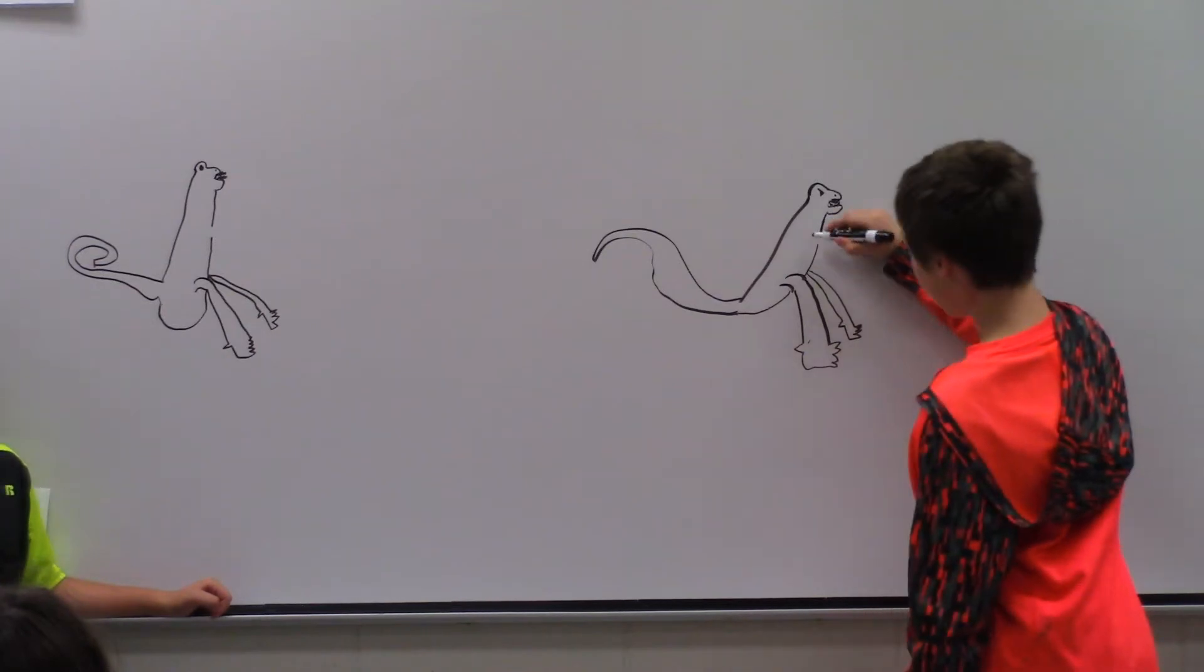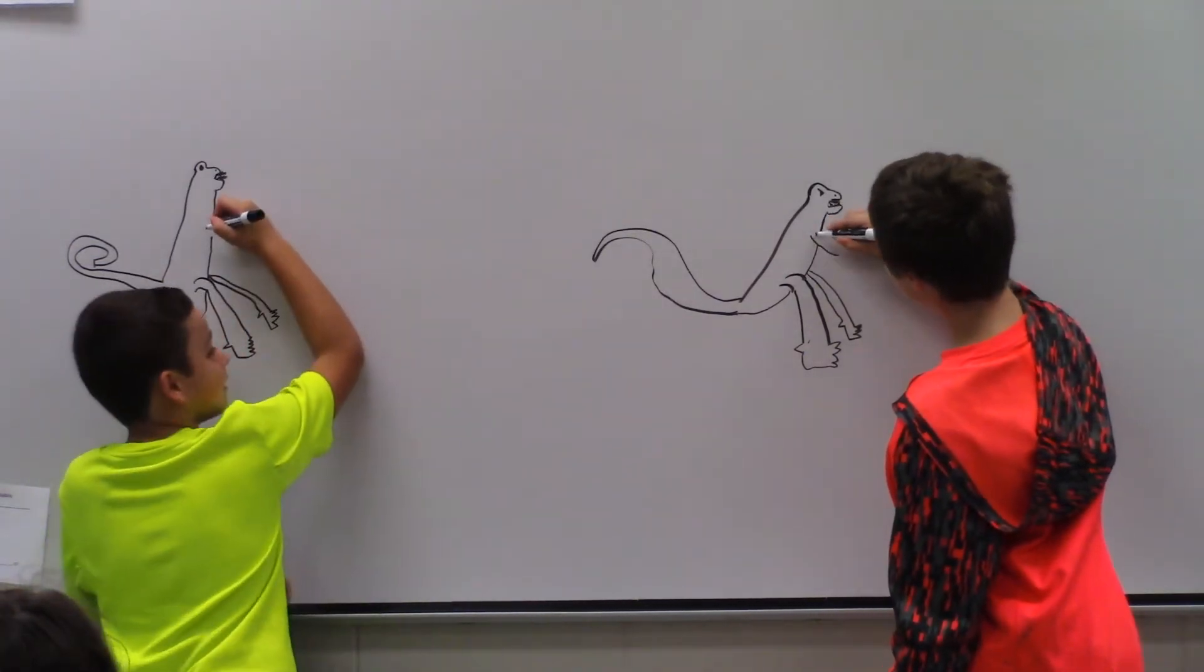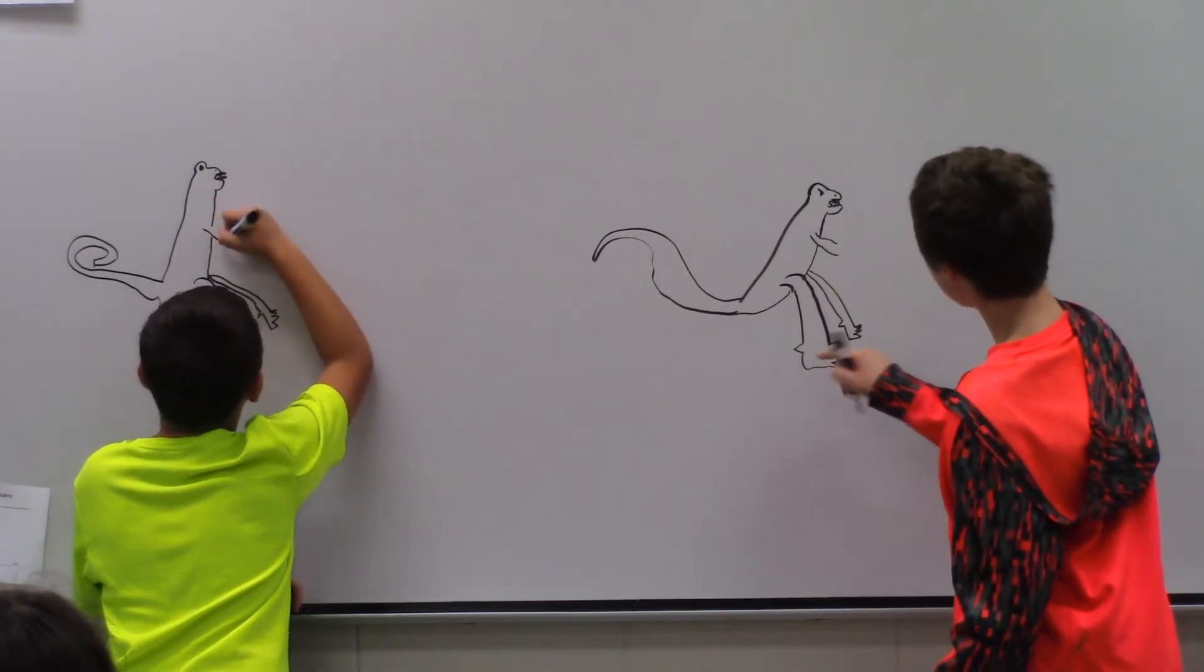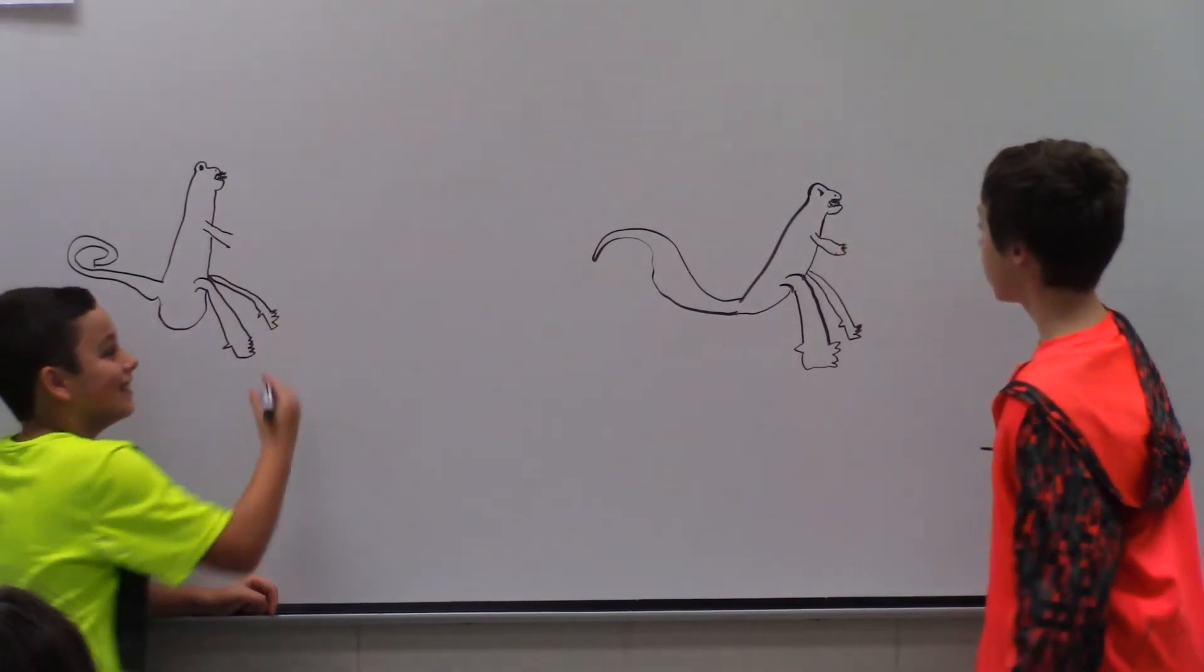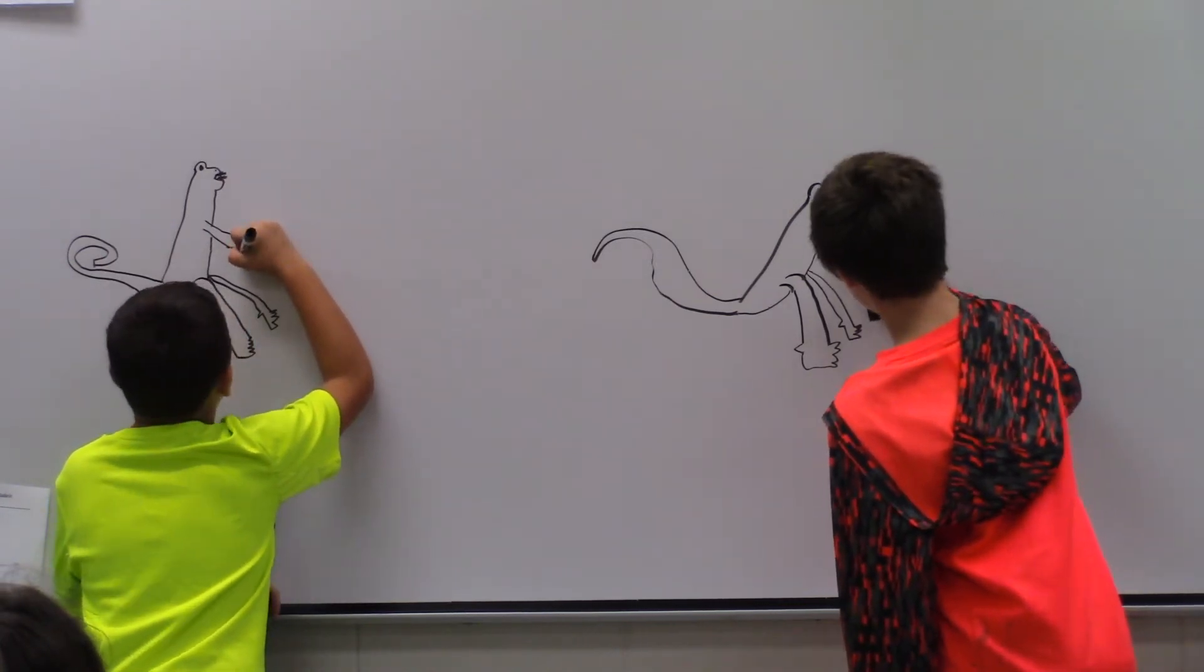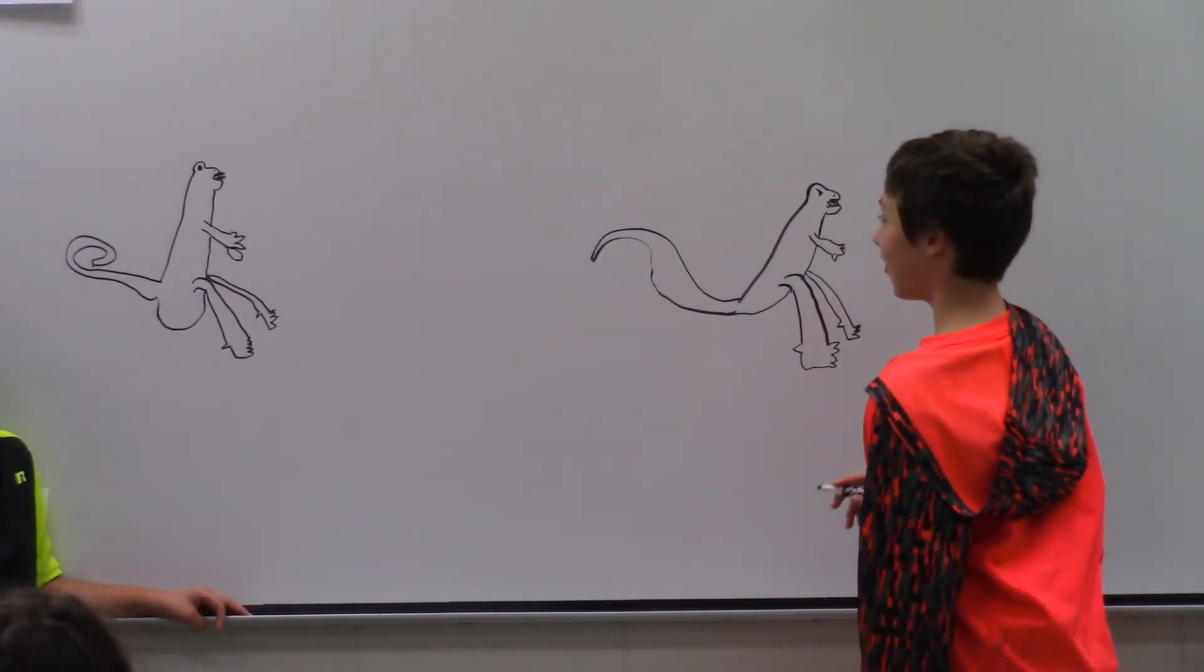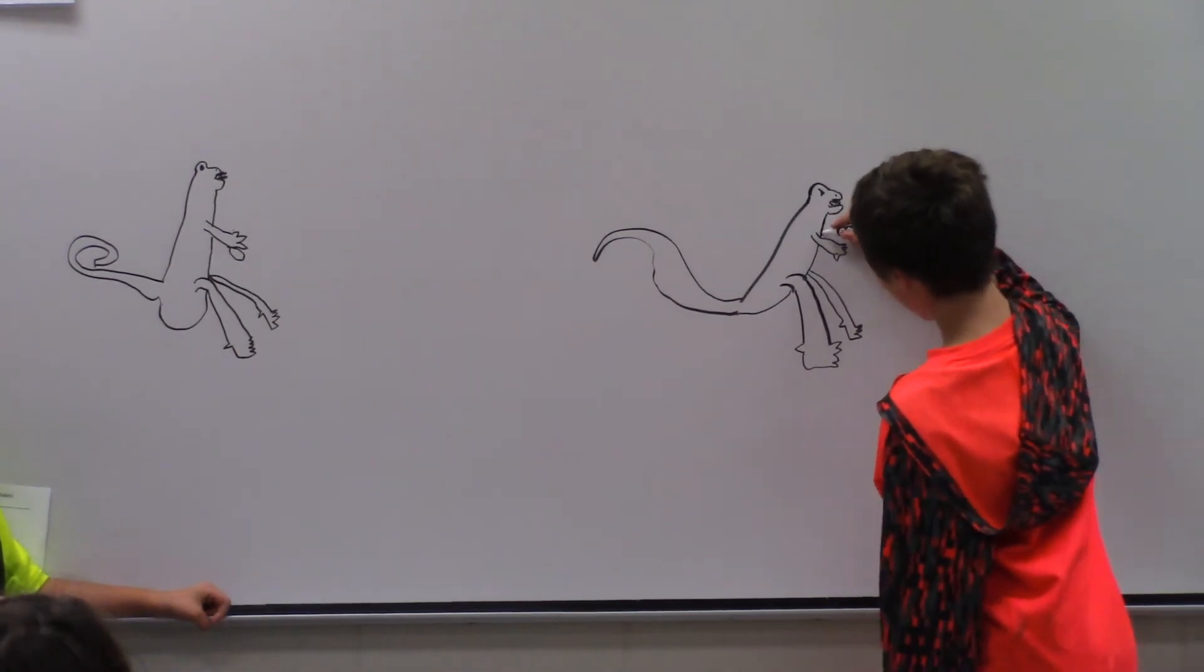And he has three fingers. So, same thing as the legs, just not touching the ground. You can just draw the other arm over here.